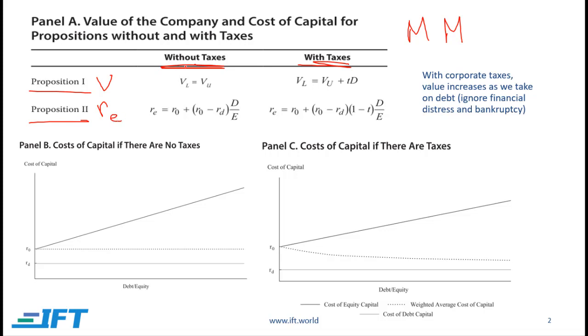Let's consider a scenario where we don't have any taxes. Here Proposition 1 is that the value of a leveraged firm is equal to the value of an unleveraged firm. In other words, the amount of debt in the capital structure does not impact the value of a firm.